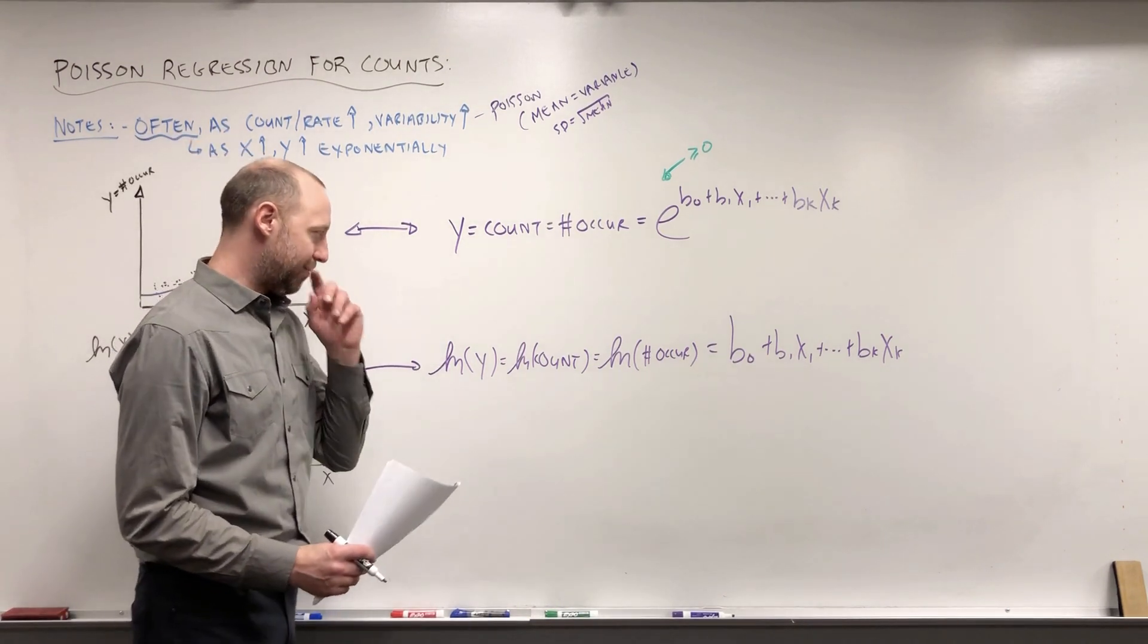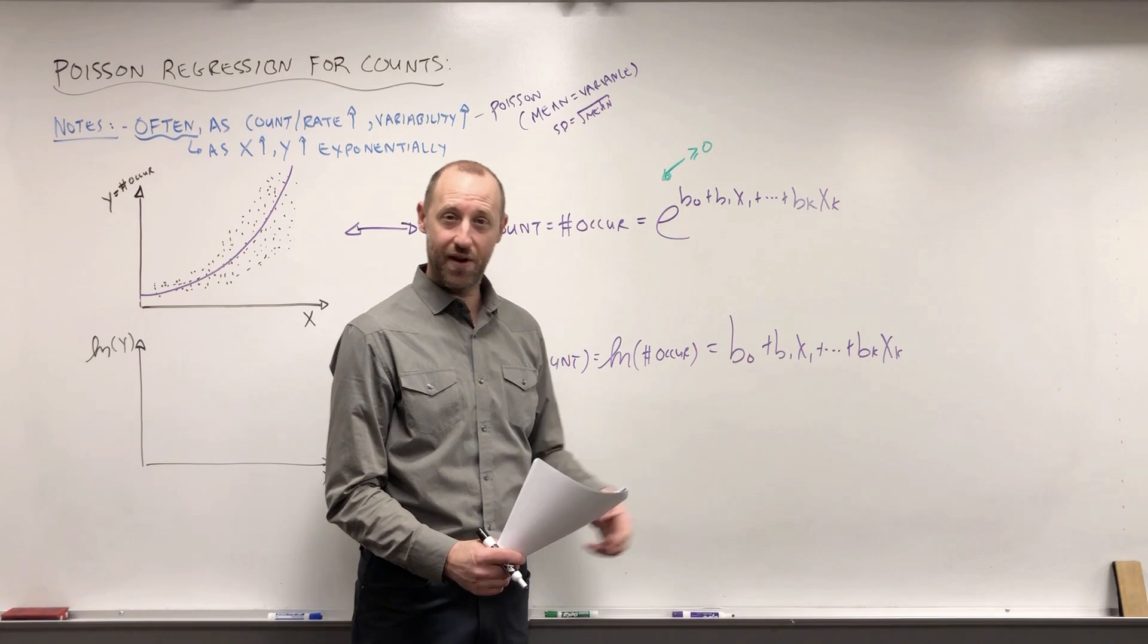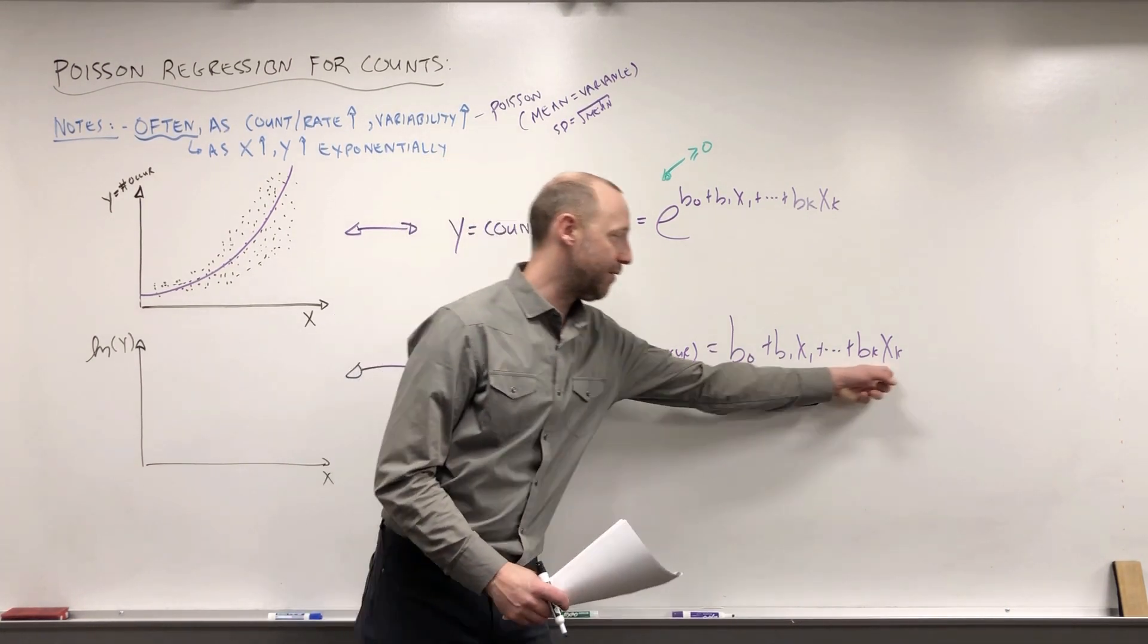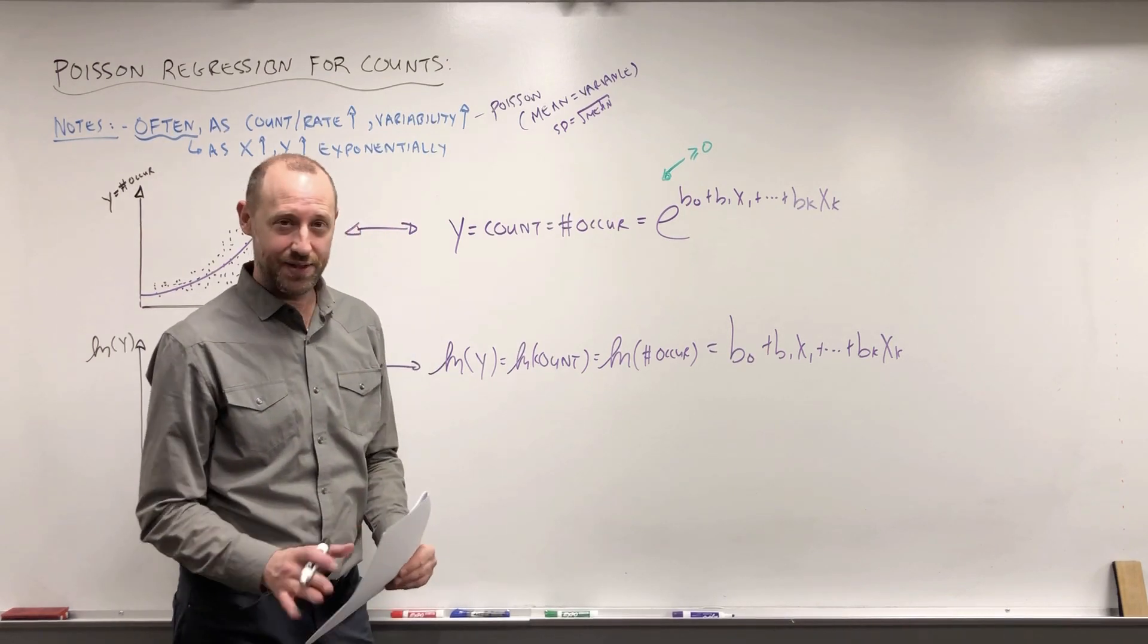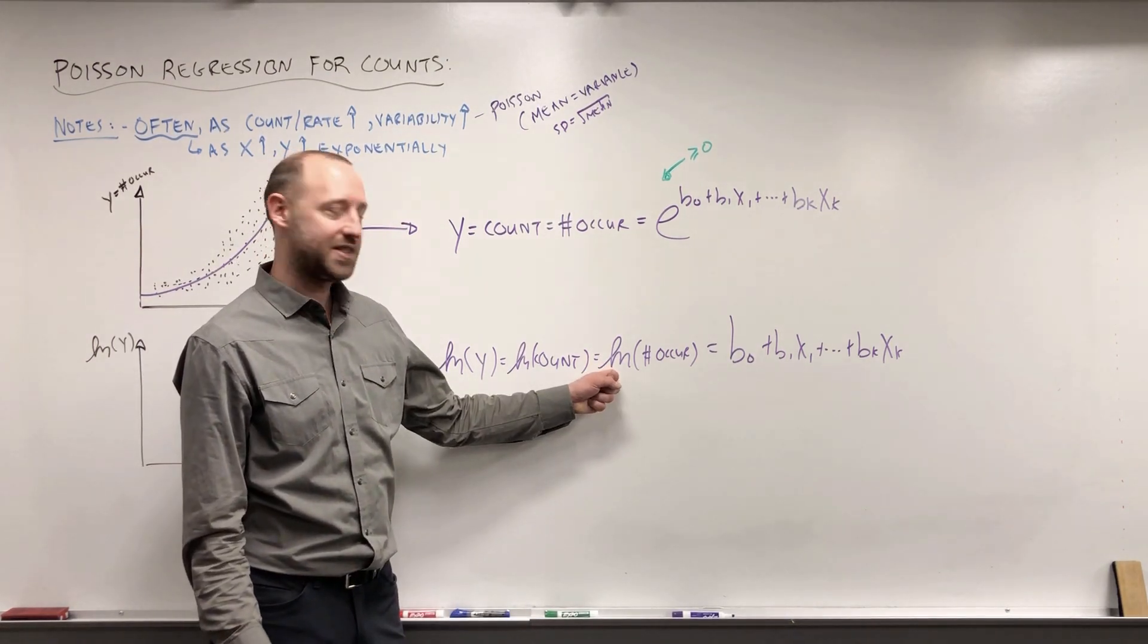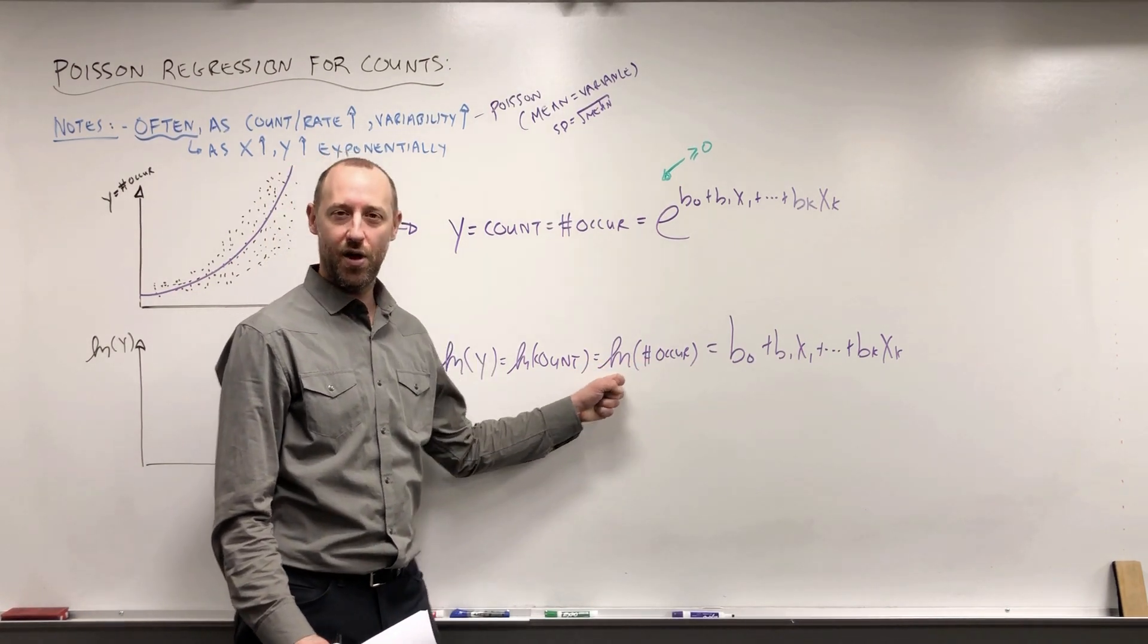So again, a few things I want to point out before I move on. In some sense, it's going to look very similar to the foundation we built in linear regression. We've got the linear term here. In some sense, it's also going to look very similar to what we learned in logistic regression. And then on this side, we're working with the log. In logistic regression, we're working with log odds. Here, we're working with the log rate.